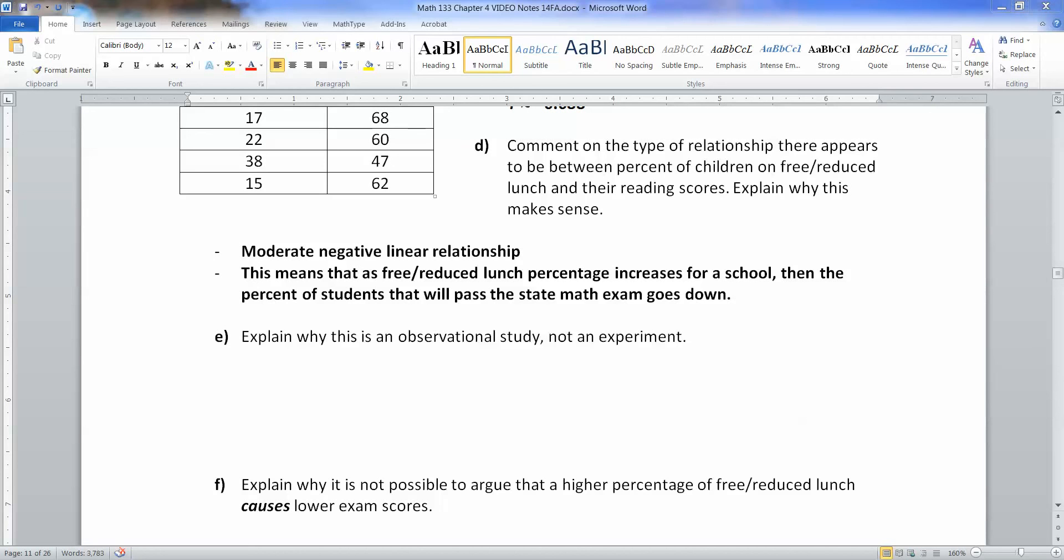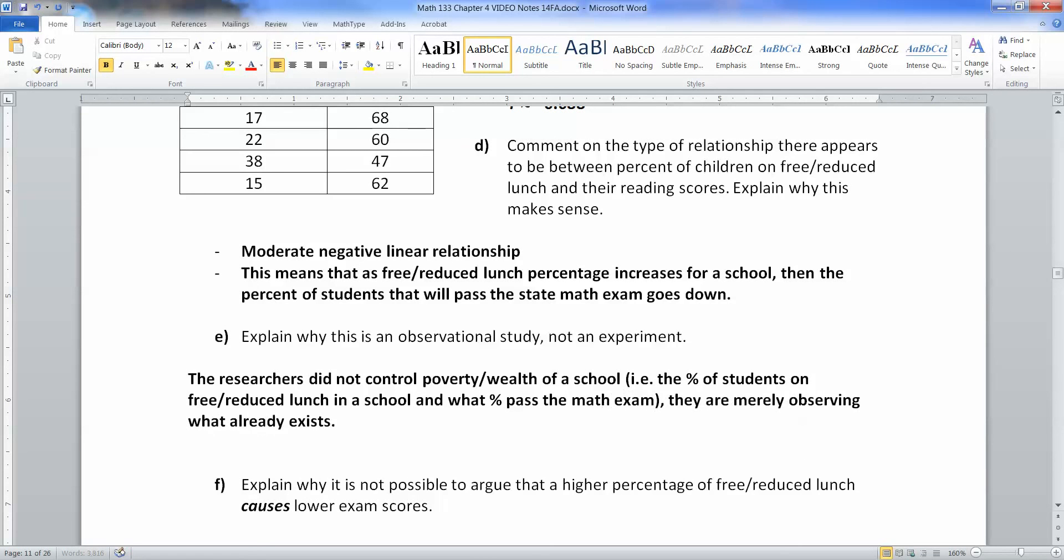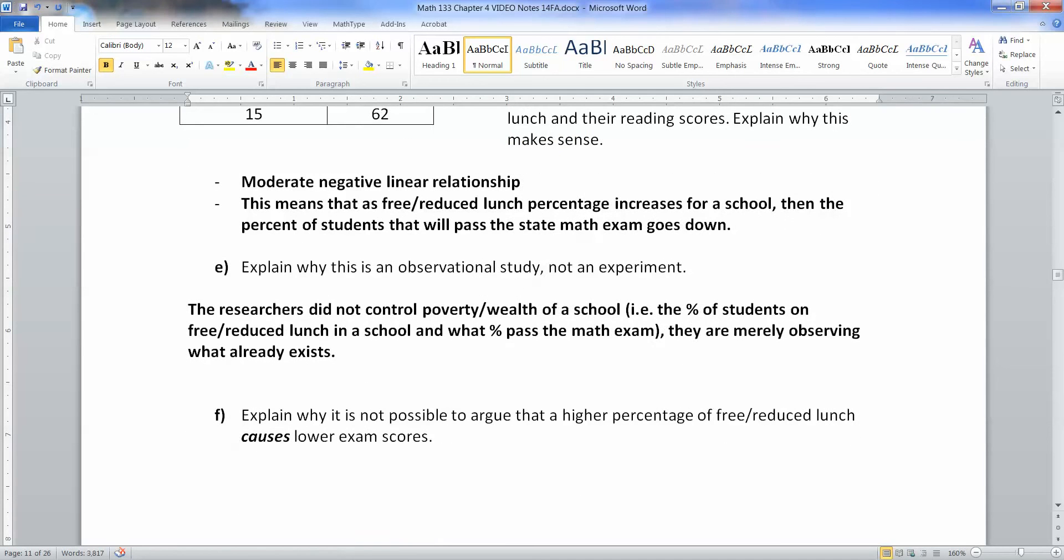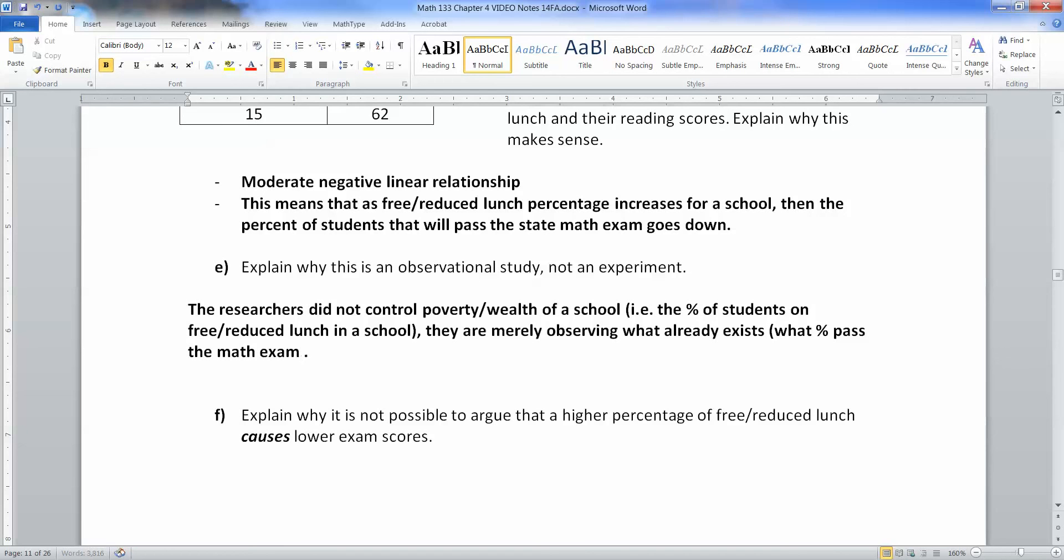Why is this observational not an experiment? For a variety of reasons, but one is that the researchers did not control the poverty and wealth of a school. They just walk into the school and observe what percentage have free reduced lunch and what percentage pass the math exam. They're not controlling that part, they're just seeing what already occurs. They're observing what already exists, the percentage that passed the math exam and the percentage on free reduced lunch.